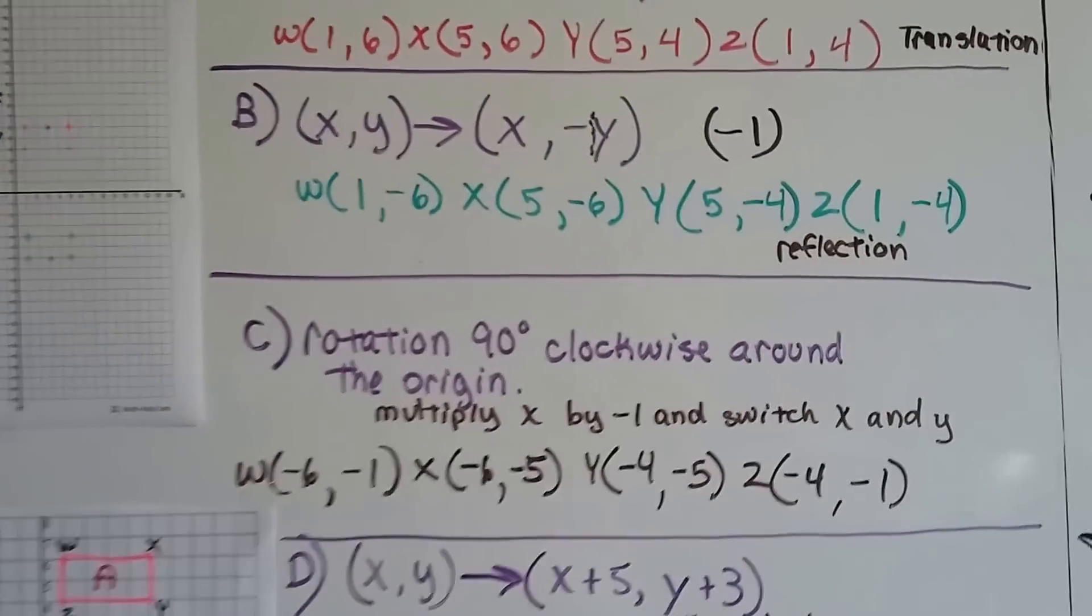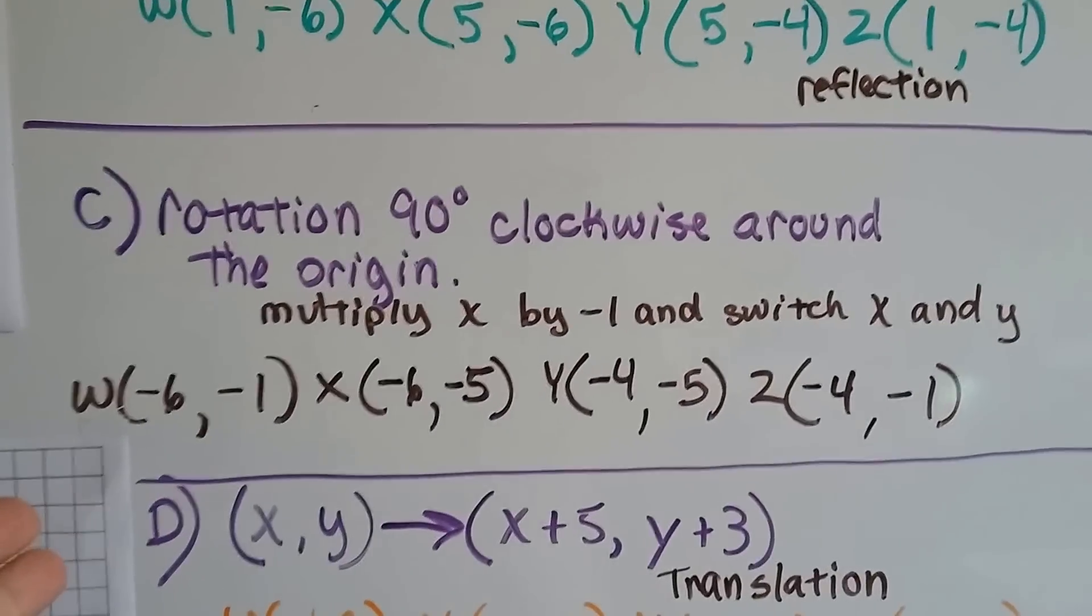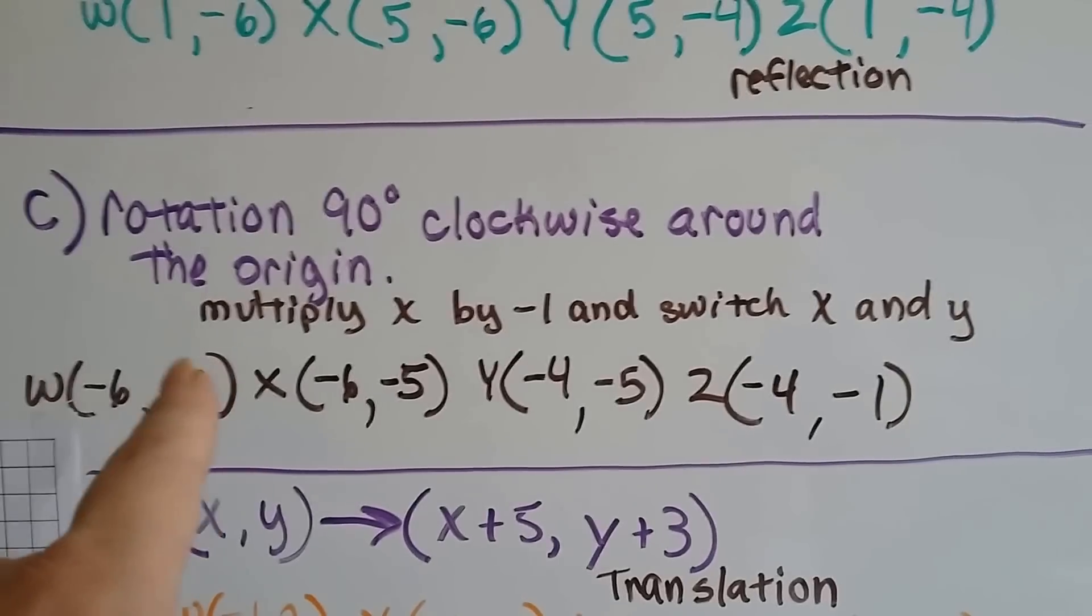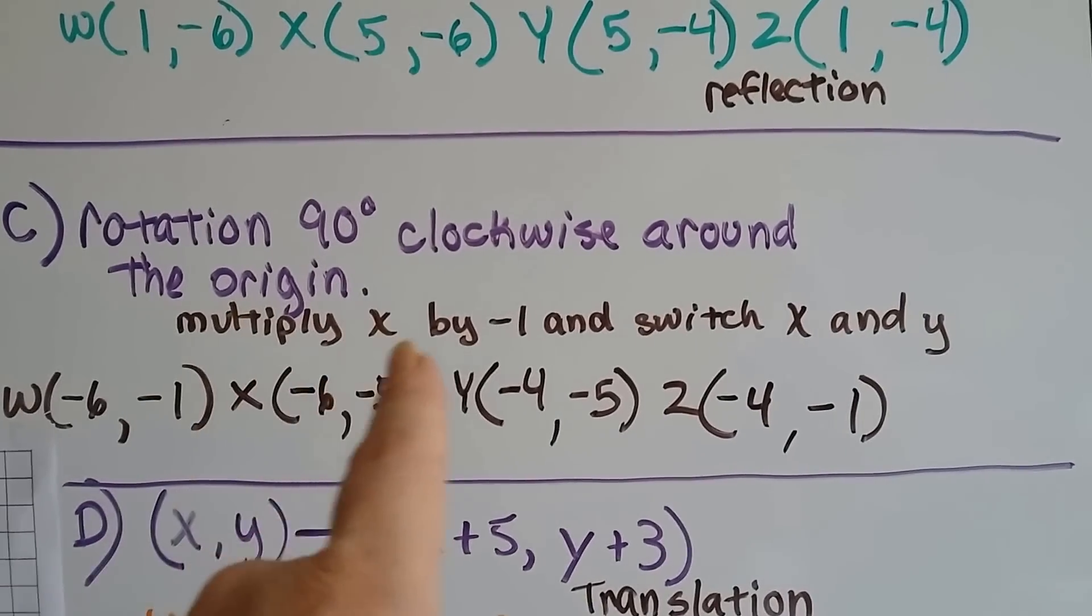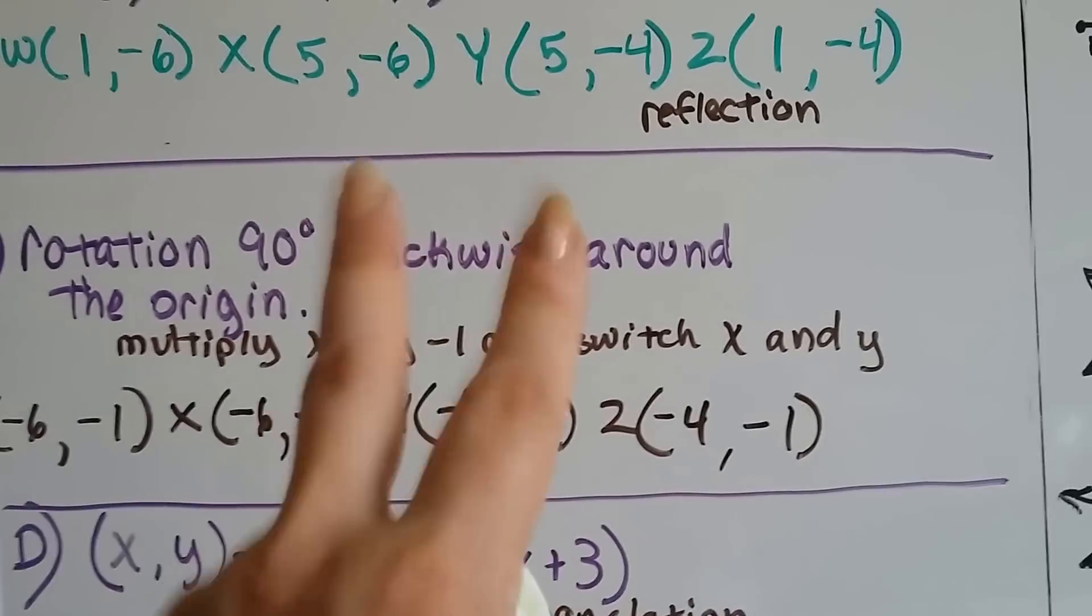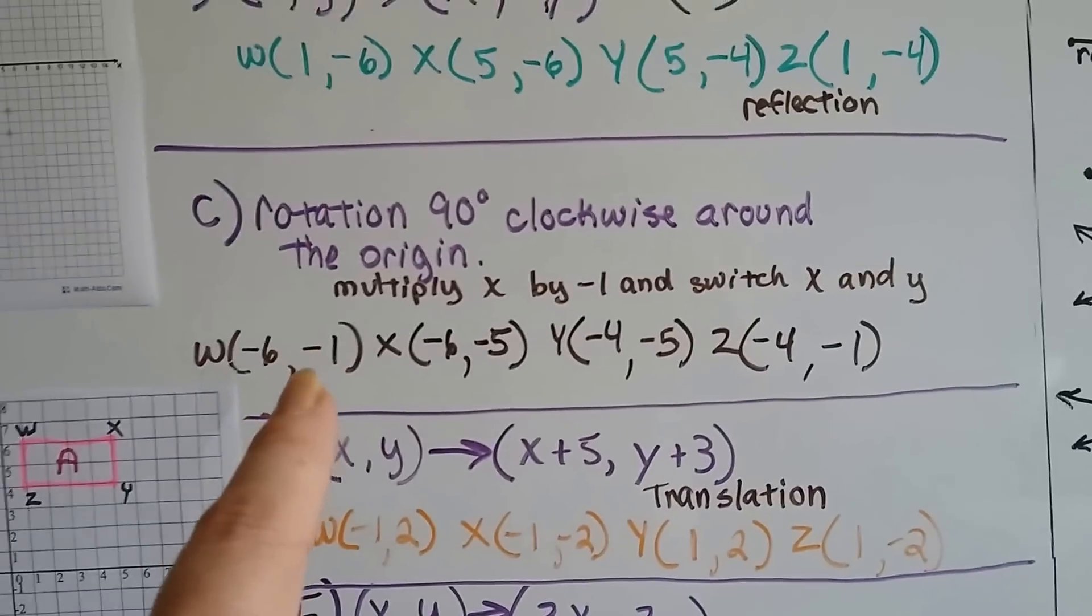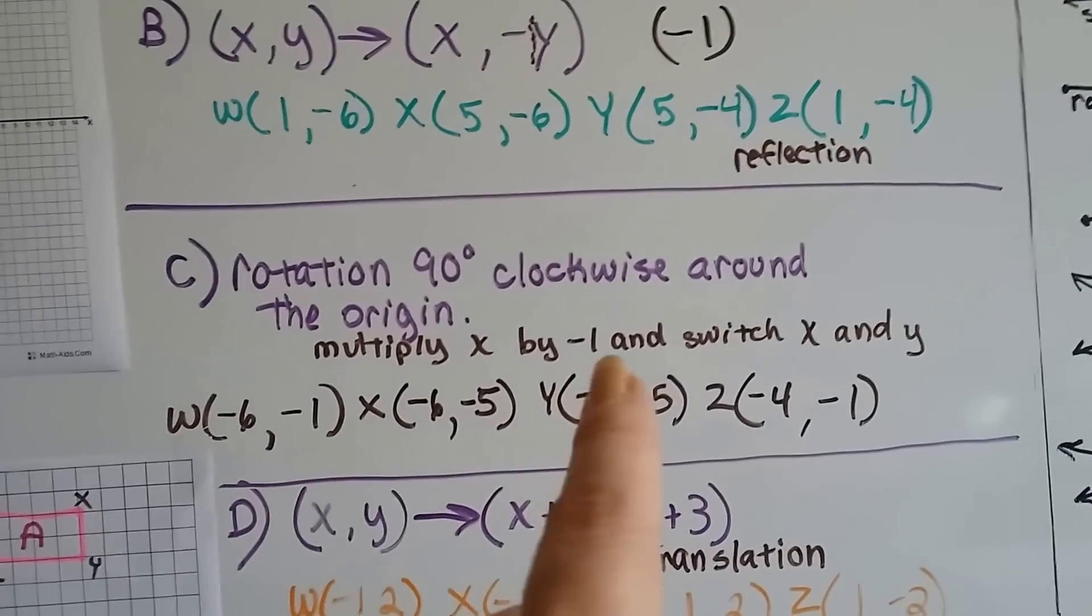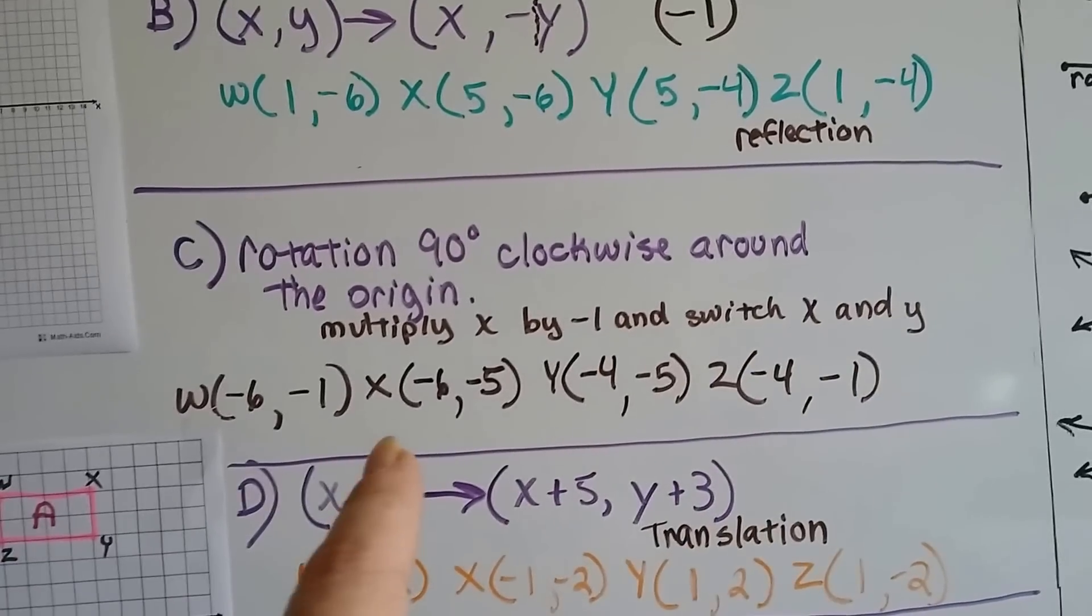Now it wants to do a rotation 90 degrees clockwise around the origin, around the center, 0, 0. What's the rule? Do you remember our rule from a few videos ago? When you do a rotation of 90 degrees clockwise around the origin, we multiply x by a negative 1 and then switch the values for x and y. So we're going to multiply x by negative 1. We look at all the x values, 1, 5, 5, and 1. We're going to multiply them by negative 1. And we're going to switch the x and y values.